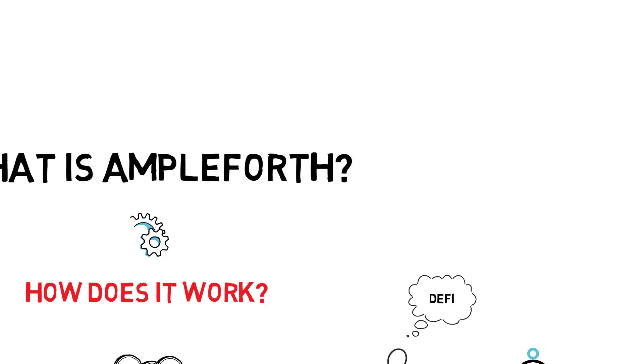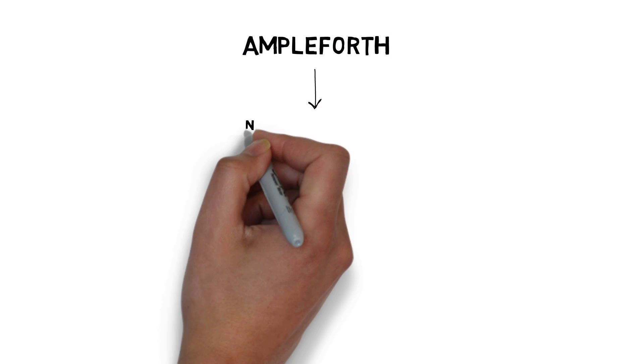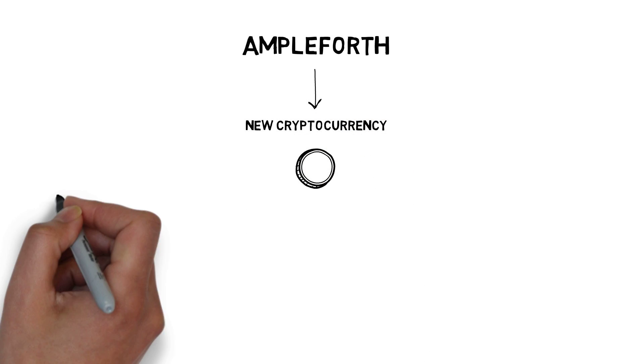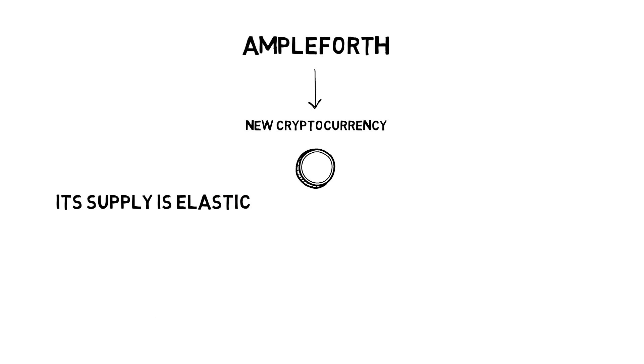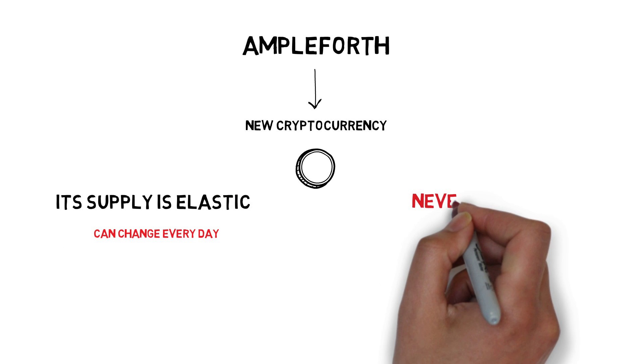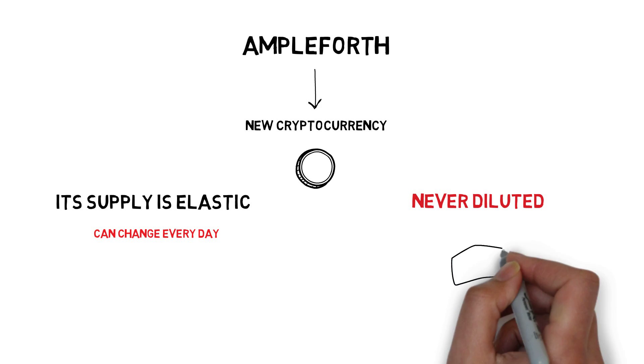So what is Ampleforth all about? Ampleforth, in essence, is a new cryptocurrency with a quite unique feature. Its supply is elastic and can change every day, while the ownership of the Ample tokens is never diluted. Let's explain what it actually means.